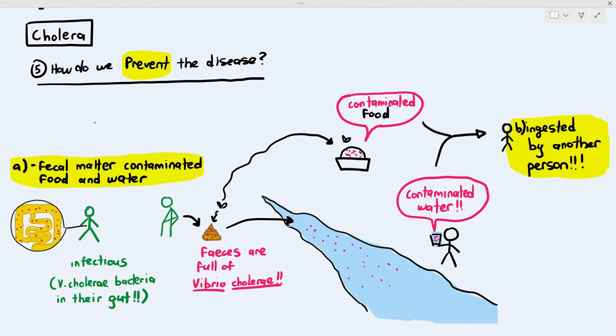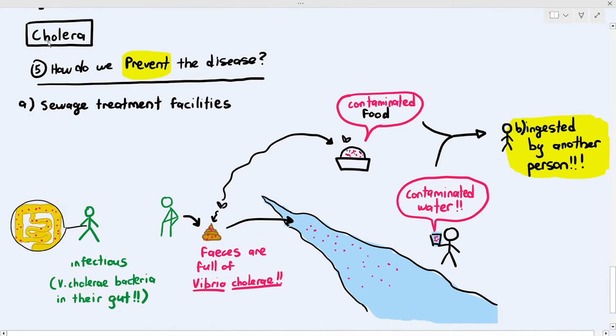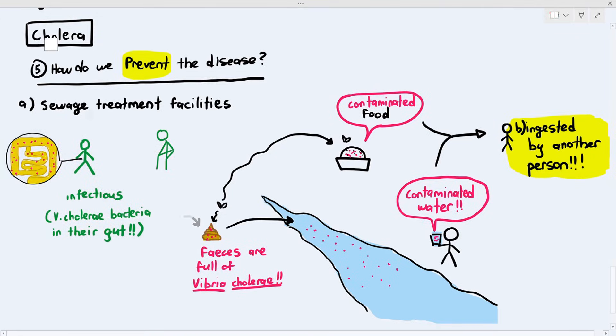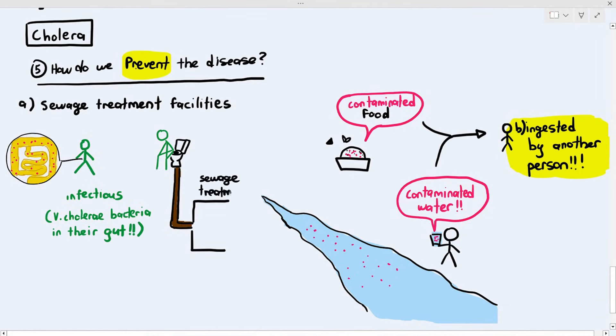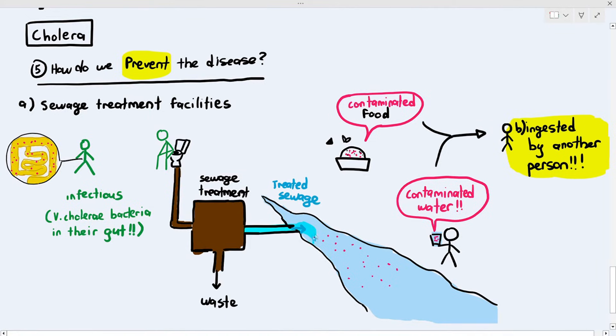How do we do that? The first most important thing that we can do is sewage treatment facilities. Countries, governments, will have to build sewage treatment facilities. Sewage treatment is what happens when we poop into toilets and the feces or our waste products will enter a sewage treatment facility. What it will do is it will filter the waste and just remove only clean water back into the river. And that's called treated sewage. In the treated sewage, it does not contain the bacteria anymore. So look at the water - the water in the river is no longer contaminated.